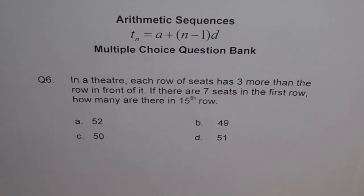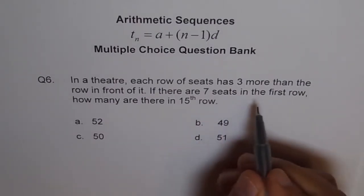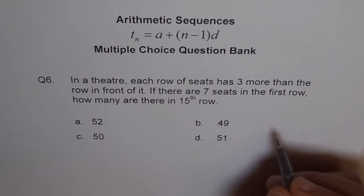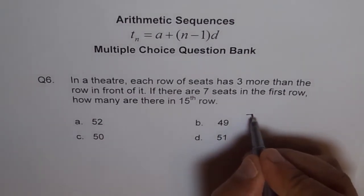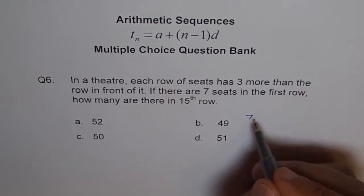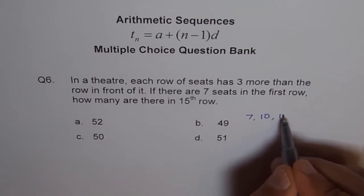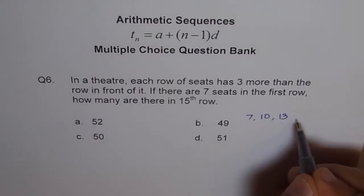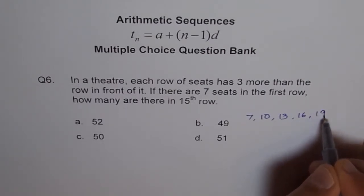Well, one way to solve this problem is we can start with 7. If there are 7 seats in the first row, and 3 more in every row, so 7 plus 3 is 10. 10 plus 3 is 13. 13 plus 3 is 16. 16 plus 3 is 19.